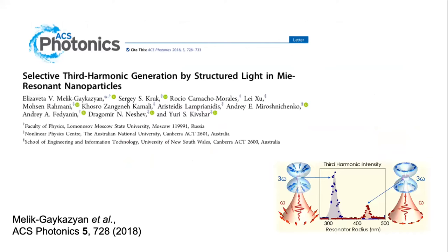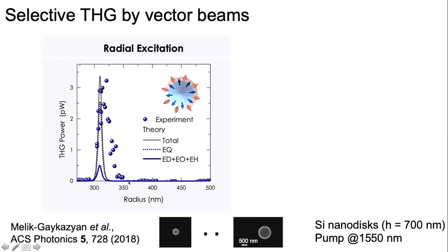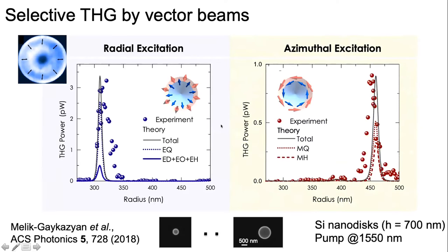We decided to check these ideas experimentally for nanodisc geometry and also in the non-linear optical regime. We had a set of silicon nanodiscs with a fixed laser wavelength; we scanned each particle and detected the signal. Our calculations confirmed that by radial excitation one could excite only electric multipoles. You can see the back focal plane image and the linear response.